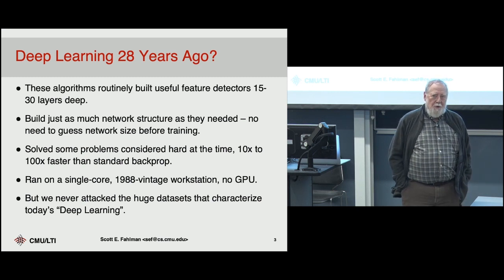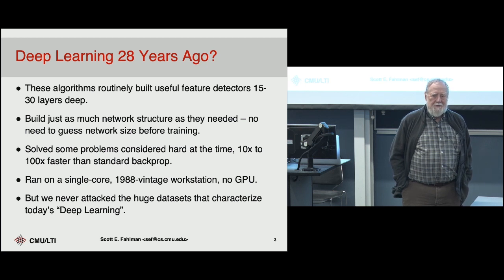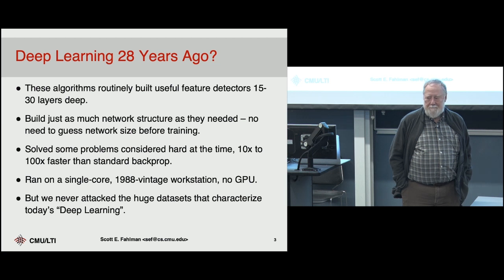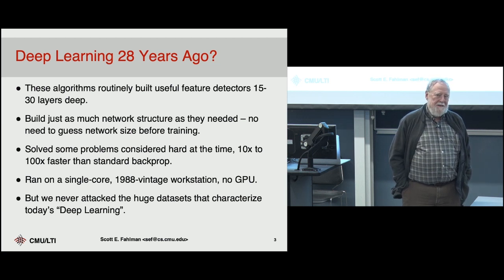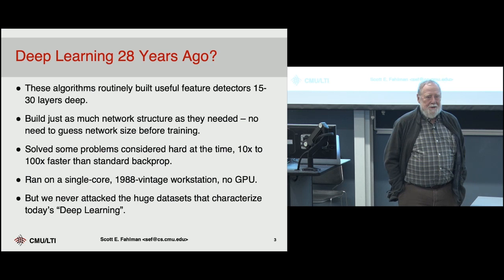What really caused it to explode around 2012, 2013 was that people realized you could take these networks and run them much faster on GPU chips and other arrays of very fast numerical processors. Where before we might have a network with two layers of at most 50 or 100 units, now you've got billions of parameters. And thanks to the internet, we've also got datasets that are millions or billions of cases. But way back in 1990–1991, we were doing deep learning of a kind.